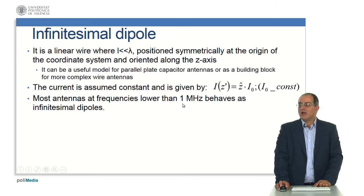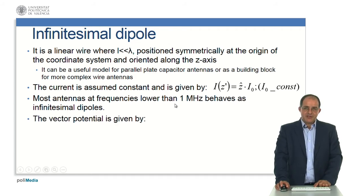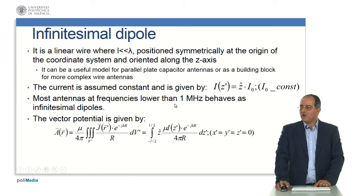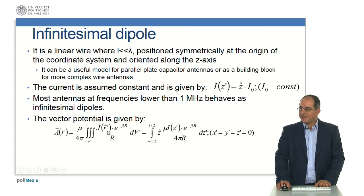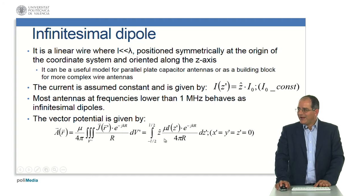What kind of antennas can these be? Most antennas at frequencies lower than one megahertz behave as infinitesimal dipoles. The procedure is exactly the same as explained in the previous modules on wire antennas. The first step is to find the vector potential, which is the 3D integral of the corresponding current density. For this elementary dipole directed along the z-axis, we can substitute the 3D integral by a 1D integral along the z-axis between −L/2 and +L/2, giving the vector magnetic potential.